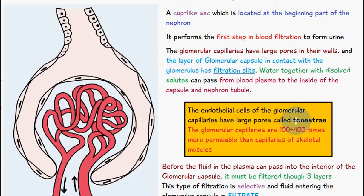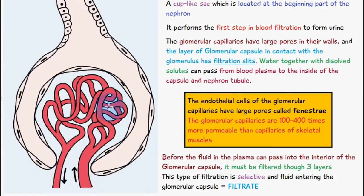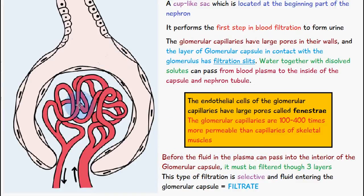The endothelial cells of the glomerular capillaries have large pores called fenestria. The glomerular capillaries are 100 to 400 times more permeable than the capillaries of skeletal muscle, so there is a large amount of filtration occurring here. Before fluid in the plasma can pass into the interior of the glomerular capsule, it must be filtered through three layers. This filtration is selective, and fluid entering the glomerular capsule is therefore known as filtrate.